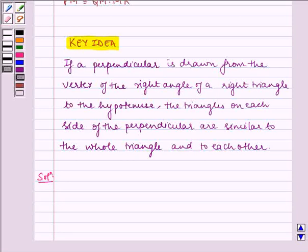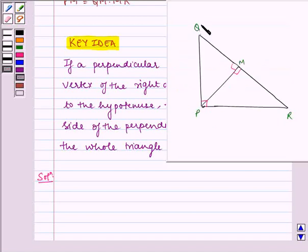We will draw a triangle PQR right angled at P, and M is a point on QR such that PM is perpendicular to QR.